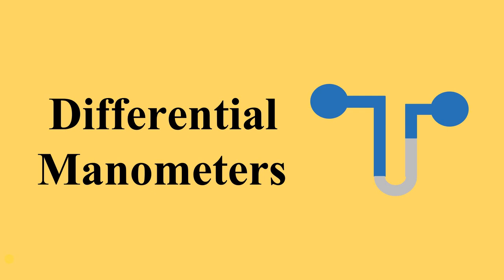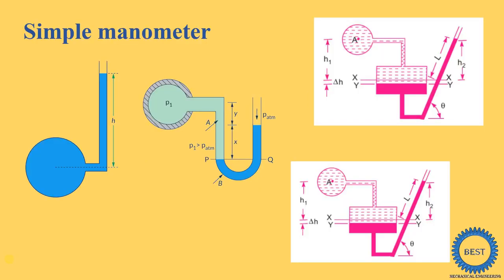In this video, I explain about differential manometers. In the last few videos, we discussed about simple manometers. In simple manometers, there are four types: piezometers, U-tube manometer, single column manometers, and inclined column manometers.